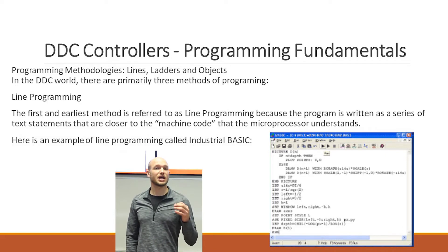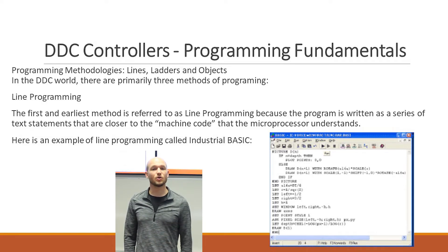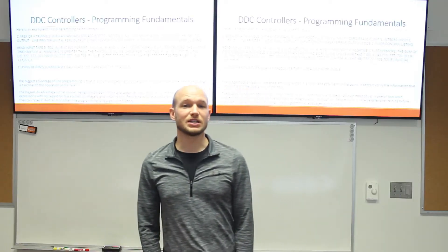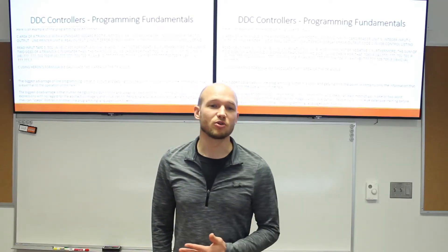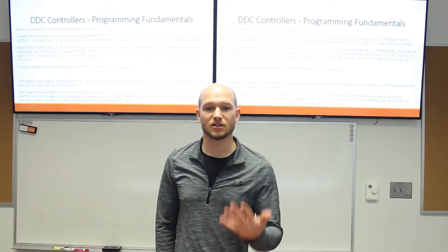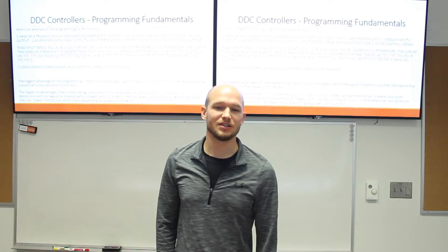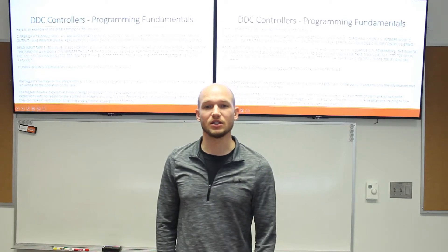Line programming is kind of code — it's line by line. There's an industrial basic. It doesn't make sense to me, but this is a way to program. The biggest advantage is that it's short — it gets right to the point and contains only the essential information. The biggest disadvantage is that it's hard to understand, hard to look at, hard to speak. We don't think or speak in this language, and it does take time to learn.